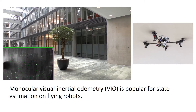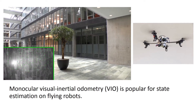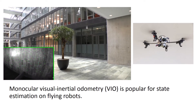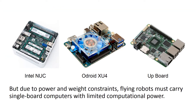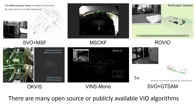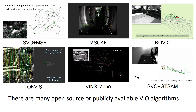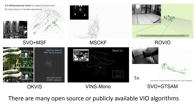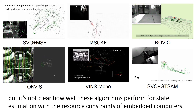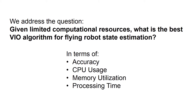Monocular visual inertial odometry is popular for state estimation on flying robots, but due to power and weight constraints, flying robots must carry single board computers with limited computational power. There are many open source or publicly available VIO algorithms, but it's not clear how well these algorithms perform for state estimation with the resource constraints of embedded computers.